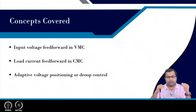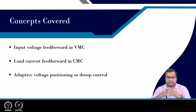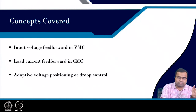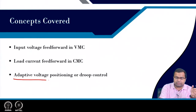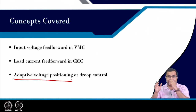We also want to see adaptive voltage positioning or droop control, which is used in microgrid applications, LED driving applications, and processor power supplies where the terminology is called adaptive voltage positioning.